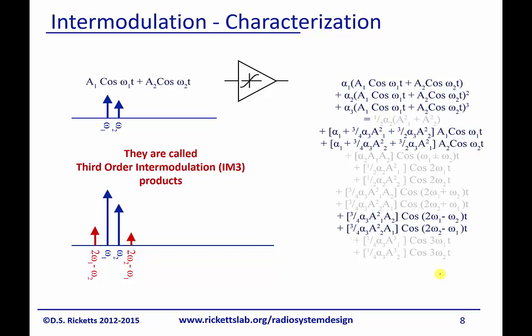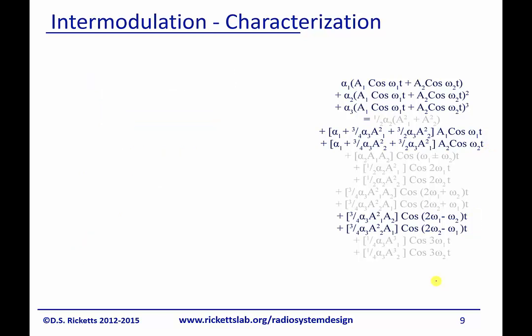And so I want to take for a second and go back to our expansion that we had before, and I just want you to look at this aspect right here and this aspect right here for the two assumptions that we have. The one assumption was that A1 equals A2, and the second one is that Omega 2 equals Omega 1 plus Delta Omega.